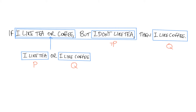Now that I've represented each of the parts of this sentence, I also need to represent the connectives between them. The word 'or' corresponds to the logical or operator. The word 'but' does not correspond exactly with a logical connective, but if I think about what it really means — 'I like tea or coffee, but I don't like tea' — I'm really saying that both of these parts are true. So the connective is a logical and. The English word 'but' carries a bit more information, since we're saying the parts are somehow opposed to each other, but for a propositional formula all I care about is true and false, so a logical and is sufficient. And finally, the if-then is logically the implies operation.